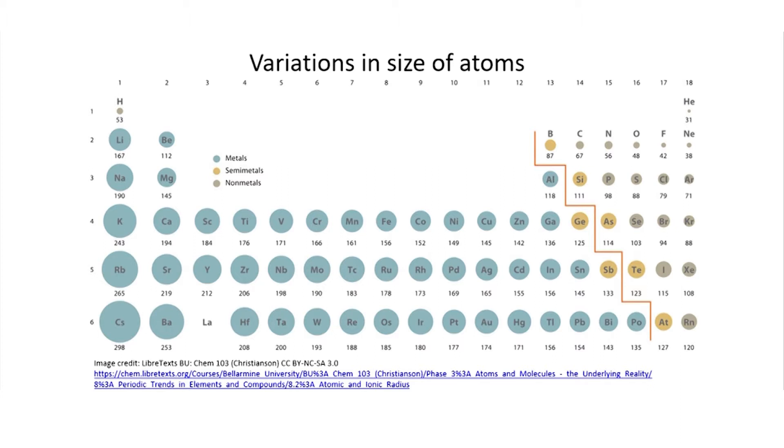The number in a periodic table is usually the atomic number, but here the numbers represent the radius in picometers.